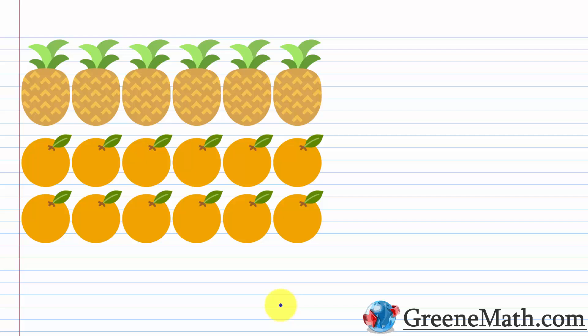Let's begin our lesson today by thinking about ratios. So what is a ratio in math? It's basically just a comparison of two quantities — how much of one thing there is compared to how much of another thing there is. So if we had something like pineapples and oranges, we could compare the number of pineapples to the number of oranges we have. We can use a ratio to do that.